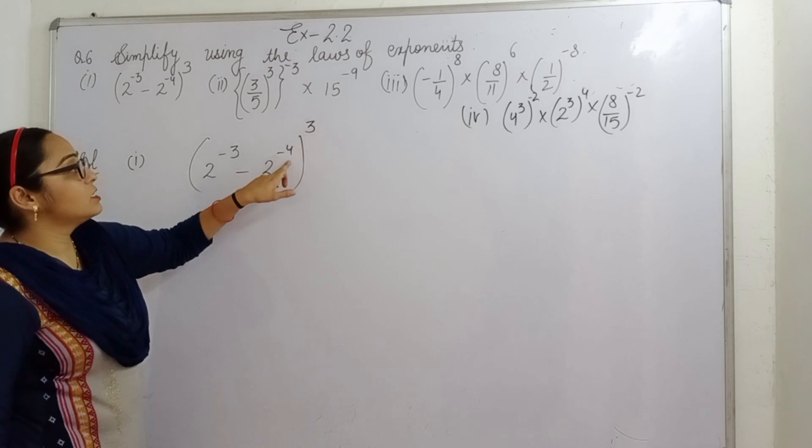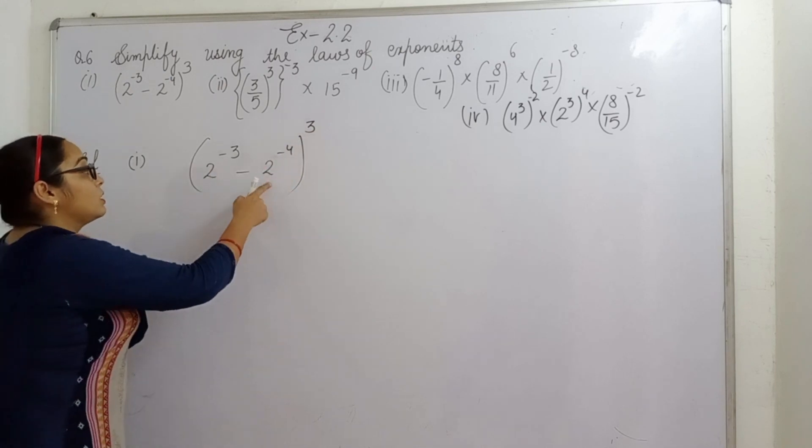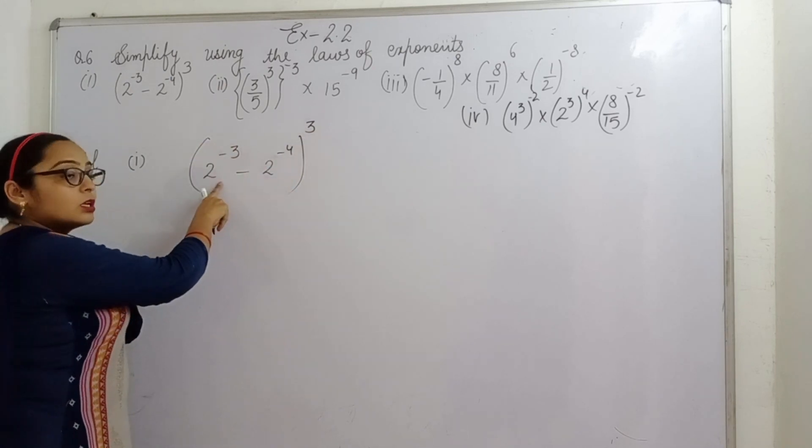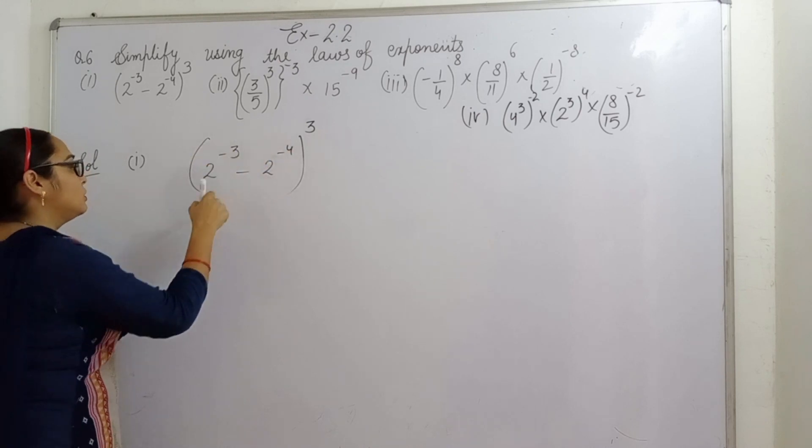You can't multiply these first because here it is subtracted with this. So firstly we will solve this one.